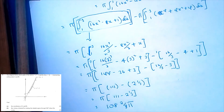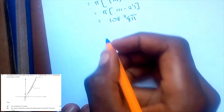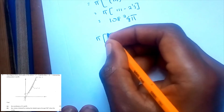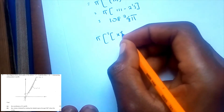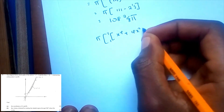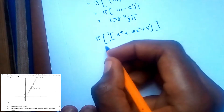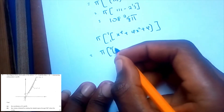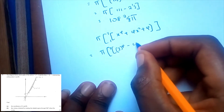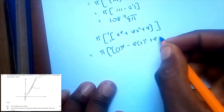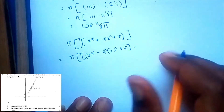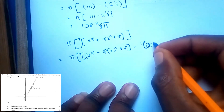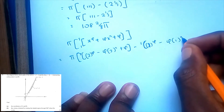For the second integral, pi times the integral from 1 to 3 of x to the power 4 plus 4x squared plus 4 dx. Substituting x equals 3: 3 to the power 4 is 81, plus 4 times 3 squared which is 36, plus 4. Then substituting x equals 1: 1 to the power 4 minus 4 times 1 squared plus 4, which equals 1.